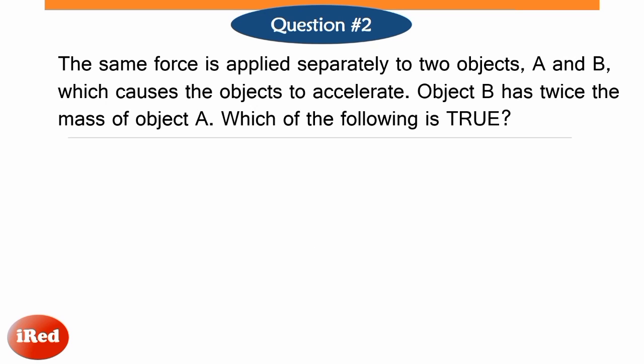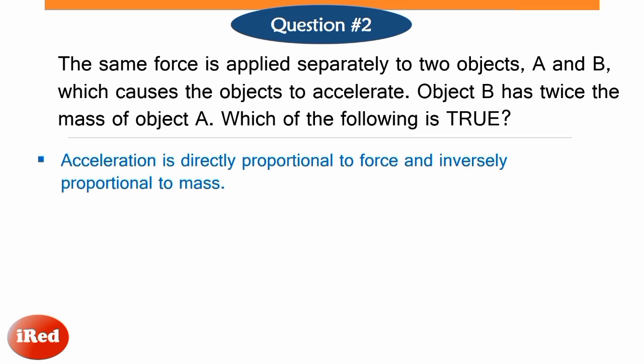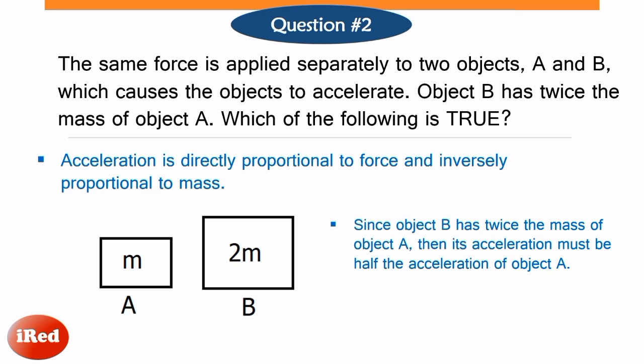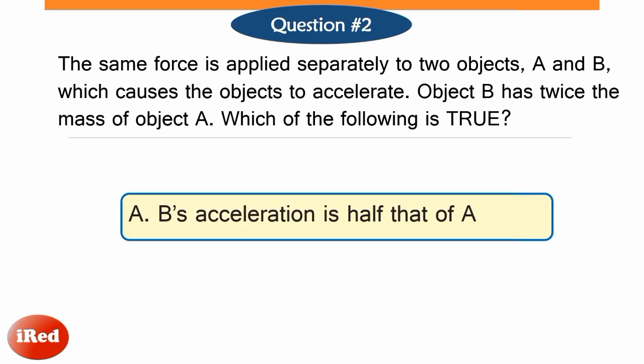According to Newton's second law of motion, acceleration is directly proportional to the net force and inversely proportional to the mass of an object. So if the same force acts on two objects, the more massive object will experience less acceleration. Since acceleration is inversely proportional to mass, the bigger the mass, the lesser the acceleration. So if object B has twice the mass of object A, then its acceleration must be half the acceleration of object A. The correct answer is letter A: B's acceleration is half that of A.